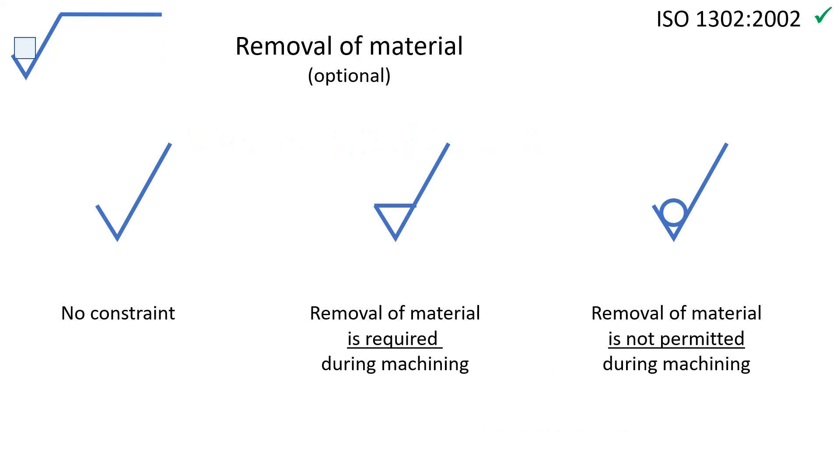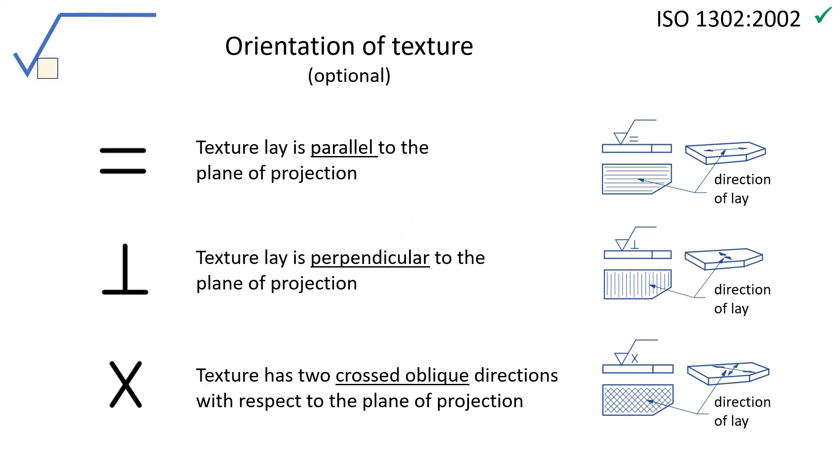Beyond the specification string below the root symbol, other indications can be noted. The triangle on the left can be open or closed or contain a circle, depending on the constraint that is required for the machining regarding removal of material. At the foot of the root symbol on the right of the triangle, it is possible to indicate the direction of the texture lay. Some machining techniques leave a signature on the texture with grooves that can be oriented differently.